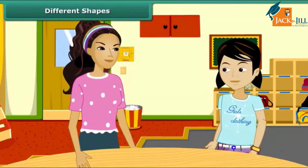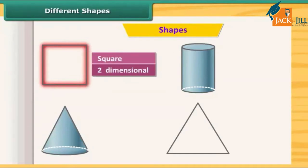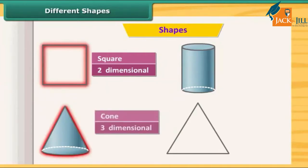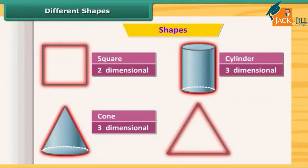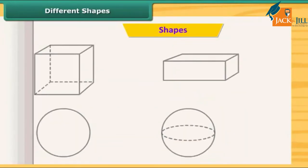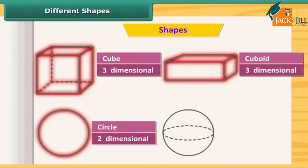Let's play a game now. You know about the two-dimensional and the three-dimensional shapes. I will show you some shapes and you will tell me their name and their type. Okay, I am ready. This is a square — two-dimensional. This is a cone — three-dimensional. This is a cylinder — three-dimensional. This is a triangle — two-dimensional. Circle — two-dimensional. This is a cuboid — three-dimensional. And this is a sphere — three-dimensional.